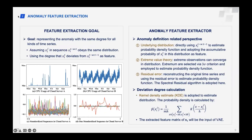The second feature type is based on extreme value theory. Extreme observations can converge in distribution; extremes are selected via the three-sigma criterion and used to estimate the probability distribution. The third feature type is residual error: we reconstruct the original time series and use the residual error to estimate the probability density function, adopting the spectral residual algorithm. We then use kernel density estimation (KDE) to fit the probability density function and the cumulative probability to represent the anomaly degree.